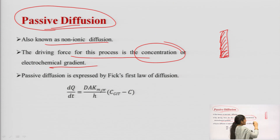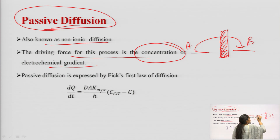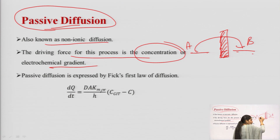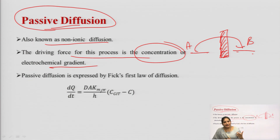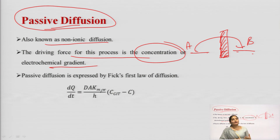A drug is transported from point A to point P across the membrane. The difference in the concentration of the drug between these two sides — the concentration at point A and at point B — is known as the concentration gradient or the electrochemical gradient. This gradient acts as the driving force for drug movement by passive diffusion.